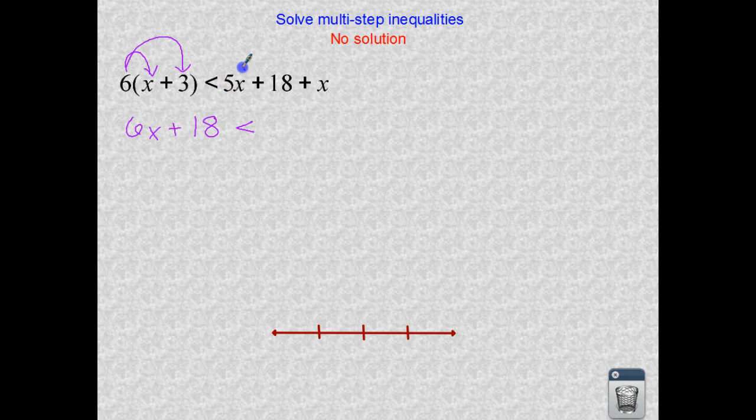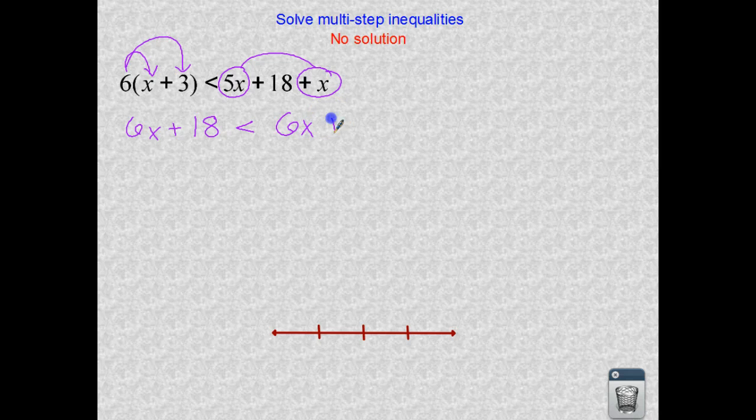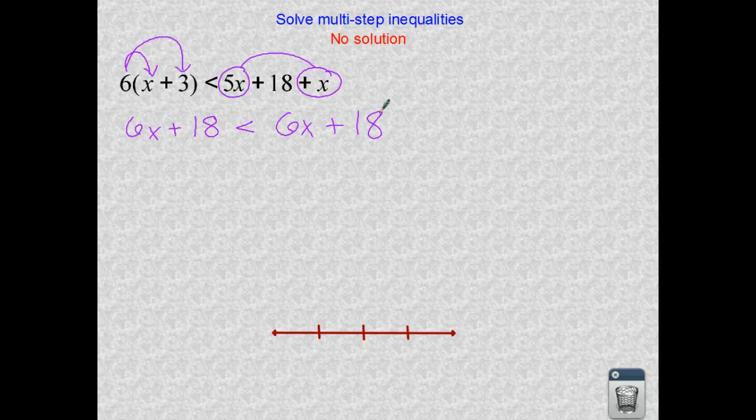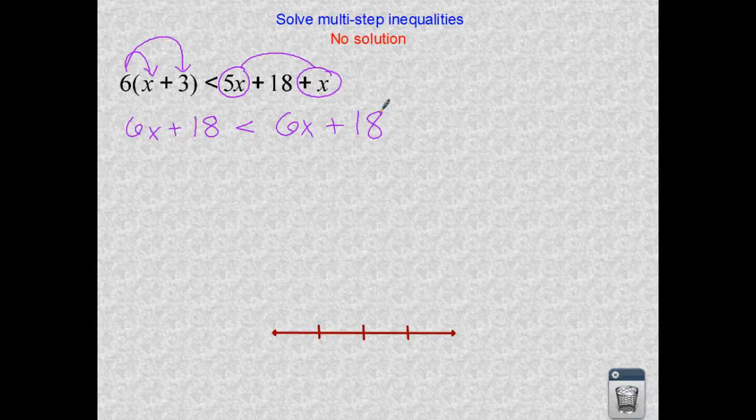Let's put these like terms together here so we can have 6x plus 18. Just looking at it right now, does that even make sense to you? Can 6x plus 18 be less than itself, 6x plus 18? So that's really a no statement. But let's get rid of those variables. Again, they're both positive 6x's, so if I bring one to the left or one to the right, it doesn't really matter. So let's just bring these 6x's to the left and subtract.